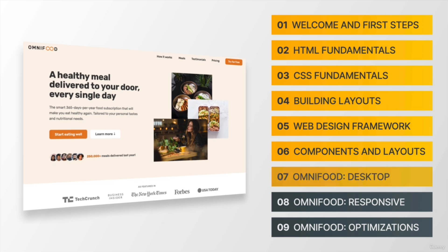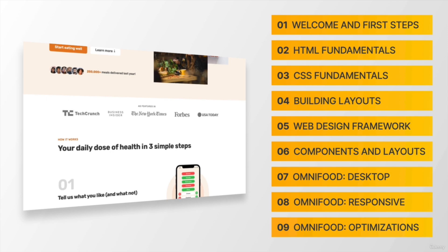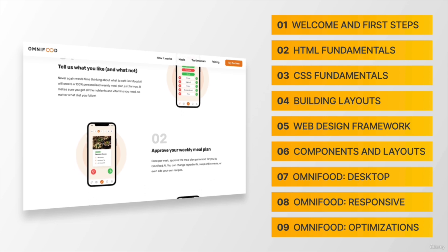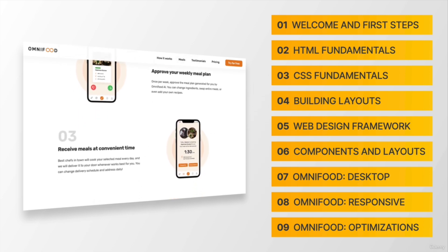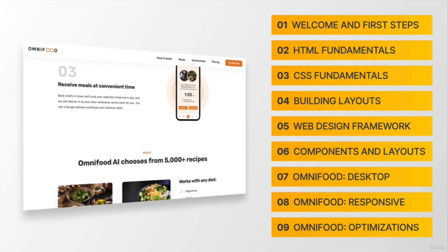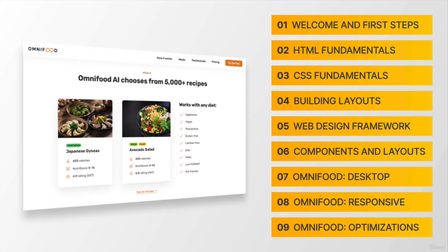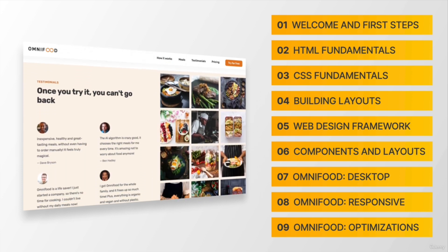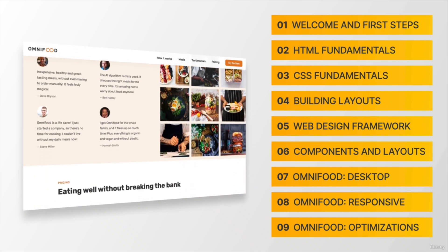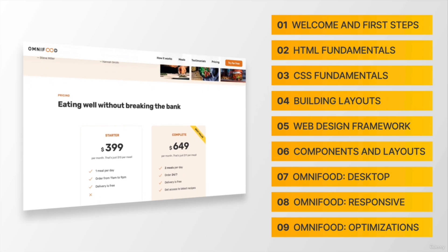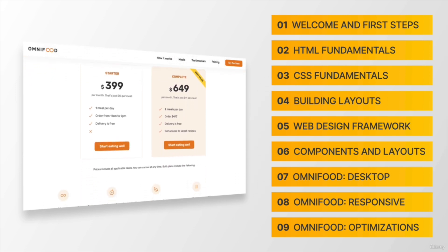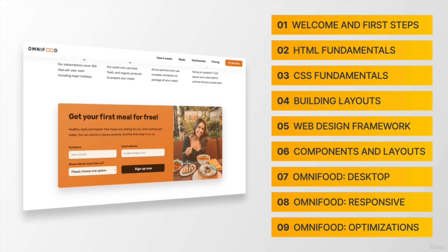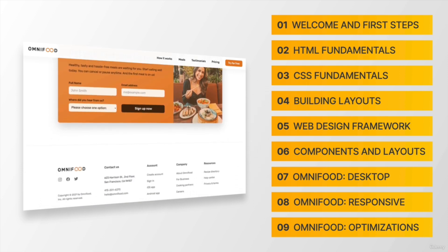Finally, sections seven, eight and nine are all about building our big course project, which is called Omnifood. Here we will build that beautiful, responsive, real-world website that this course is all about, using all the skills accumulated up to that point. You'll also learn new things such as how to plan and sketch a website, how to make it responsive, and how to handle such a big project from start to finish. By the end of the course, you will be able to design and build something like this on your own.